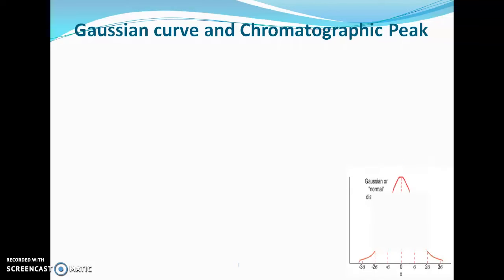First we'll see the relationship between Gaussian curve and chromatographic peak. Gaussian curve is also known as normal error curve or normal distribution curve. It resembles a bell shape. When replicate values of a measurement are plotted as a function of frequency of their occurrence, a Gaussian curve is obtained, and a chromatographic peak resembles this Gaussian curve.